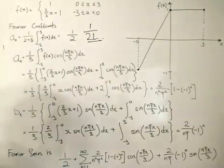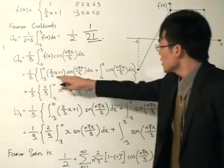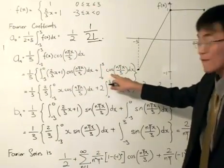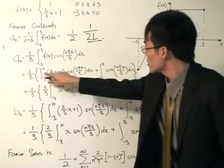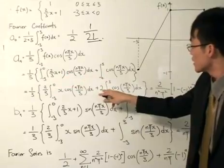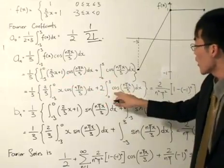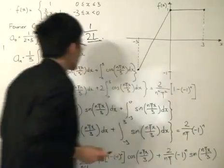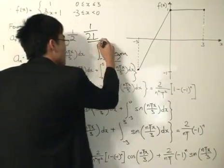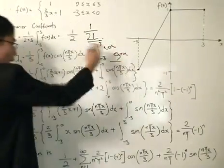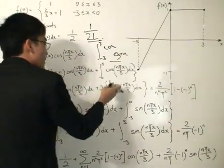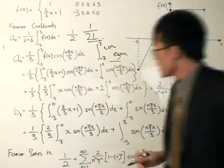I noticed that there's an integral from minus 3 to 3 of the cosine function, and after that, an integral from 0 to 3 of the cosine function. So I grouped these two together, and this simply gives me 2 times the integral from 0 to 3 of the cosine function. Why? Because we know that cosine is an even function. Since the integral from minus 3 to 3 of an even function equals twice the integral from 0 to 3.